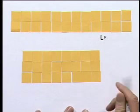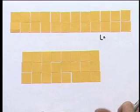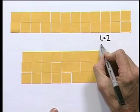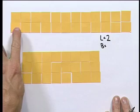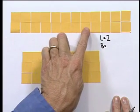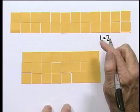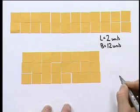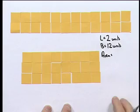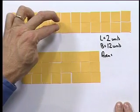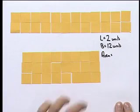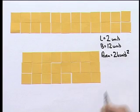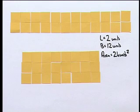The length of this rectangle is 2 units. The breadth of this rectangle is 12 units. And the area is 24 units squared.